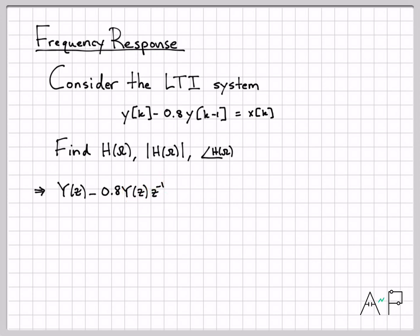y of k minus 1 is y of z times z to the minus 1. So if you don't remember that property, go back on the channel. There are tons of examples of how to do the z transform of signals. But in general, a shift k minus 1 introduces the polynomial term z to the minus 1. So that is the z domain term corresponding to this time domain term. And then finally, on the right side of the equation, x of k turns into x of z.